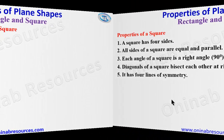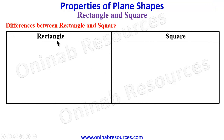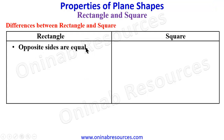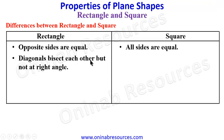We then go ahead to get the differences between rectangle and square, in tabular form — first column for rectangle and the second column for square. For rectangle, opposite sides are equal, but for square, all sides are equal. We've seen them in their various properties.